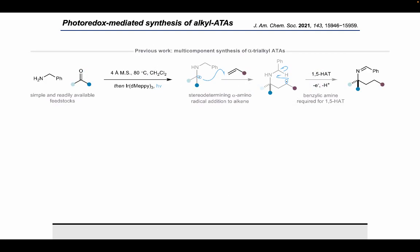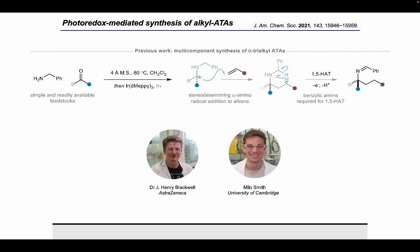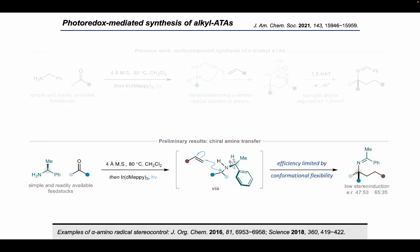In 2021 our group published a multicomponent method for the photoredox-mediated synthesis of alpha trialkyl alpha tertiary amines from benzylic amines, ketones, and alkenes using an iridium-based photocatalyst under blue light irradiation. Working with Henry, a former PhD student now at AstraZeneca, and Milo, we were able to show that single electron reduction of an in-situ generated ketimine generated an alkyl alpha amino radical, which could then undergo radical addition into an alkene to form the alpha tertiary center. The subsequently generated radical underwent 1,5-hydrogen atom transfer to form a highly stabilized benzylic radical, which could be oxidized to close the redox-neutral cycle. Following this work, I observed that by exchanging benzylamine for alpha-methyl benzylamine and thereby introducing a chiral center, a low level of stereo-induction was observed in the alpha tertiary amine products.